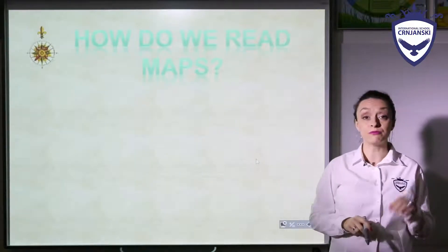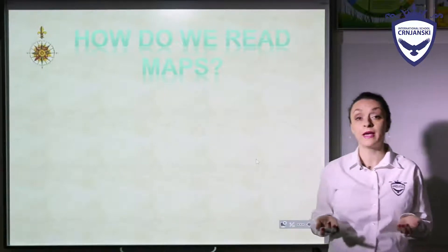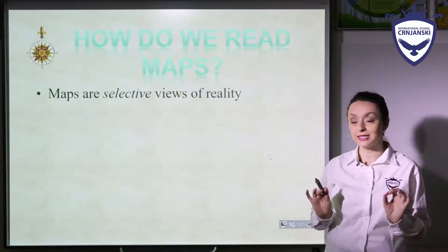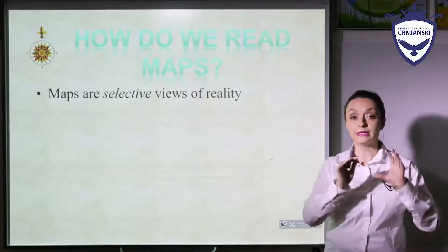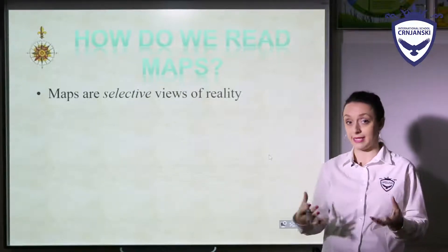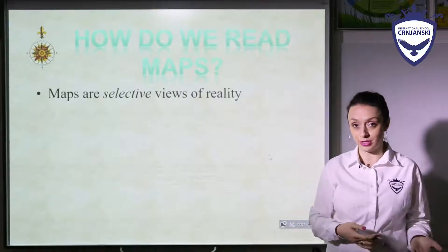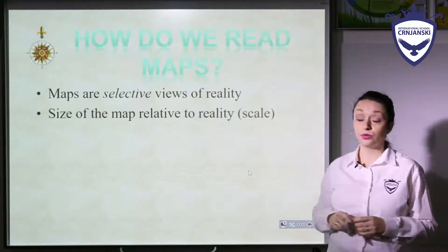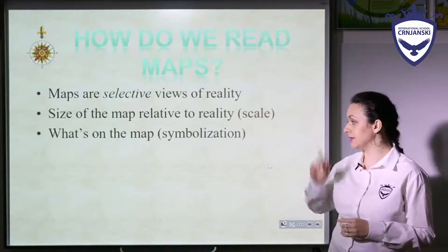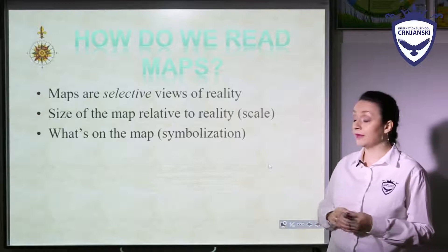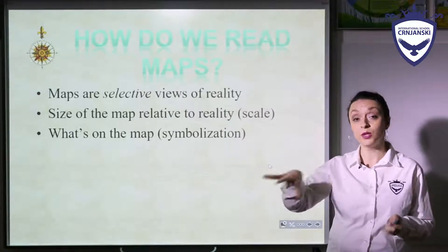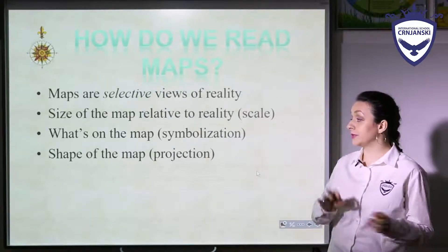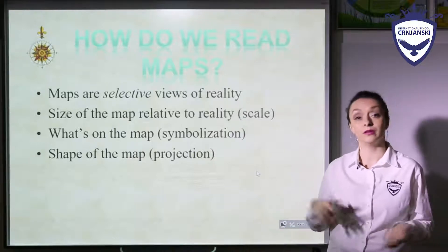How do we read maps? The important thing when you use maps is that you can read them correctly. Maps are selective views of reality — we select some of the things we want to present and then read the information. The size of the map is relative to reality, and this is called scale. We also have to read what is on the map, meaning we have to read symbolization, and there are different shapes of the map, meaning different projections.